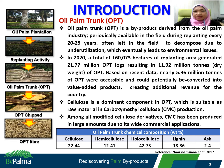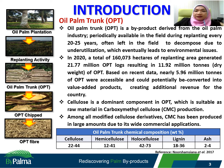Generally, OPT is the most abundant biomass produced, representing approximately 8.42% from plantation and processing mills. In 2020, a total of 160,070 hectares of replanting area generated about 21.77 million OPT logs, resulting in 11.92 million tons of OPT. Previous studies reported that 50% of OPT was applied at the plantation for soil and nutrient maintenance, meaning nearly 5.96 million tons of OPT were accessible and potentially convertible into value-added products, creating additional revenue for the country.